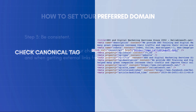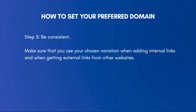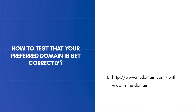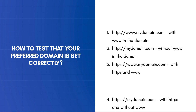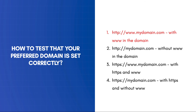The last step is to make sure that you use your chosen variation when adding internal links and when getting external links from other websites. To test that your website can successfully redirect from one version of your domain to the other, open a browser window and type your domain name without the www. If your preferred domain is set to https://www.example.com, then the page should automatically redirect to the www version. If you have HTTPS installed on your website, repeat the test for all four variations — all should redirect to the format specified in your website settings.